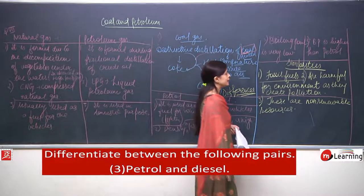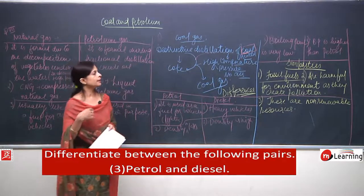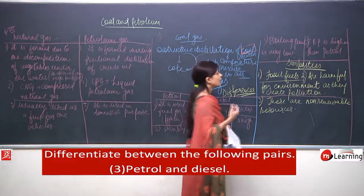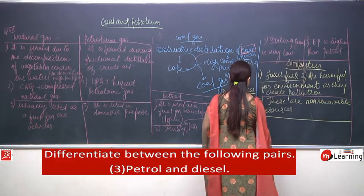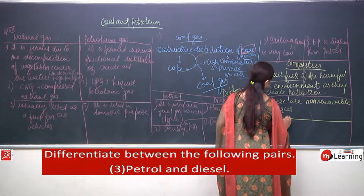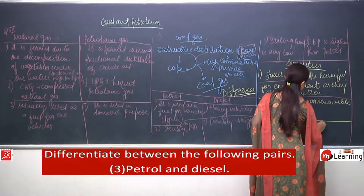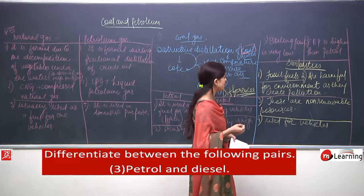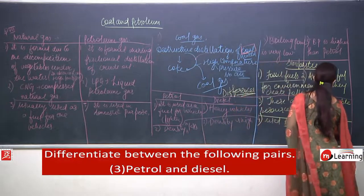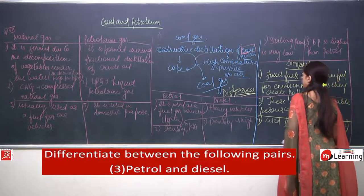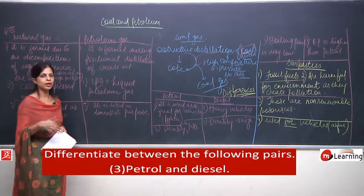The main similarities are: both are fossil fuels, both produce a lot of energy, but both create pollution. Both are used as fuels for vehicles — petrol for lighter vehicles and diesel for heavier ones.